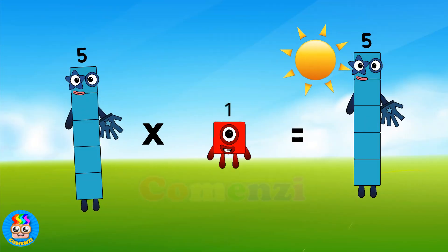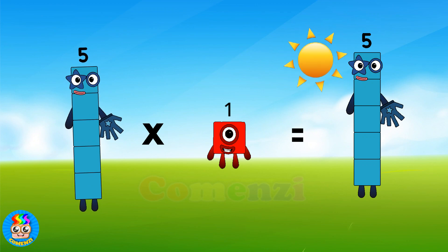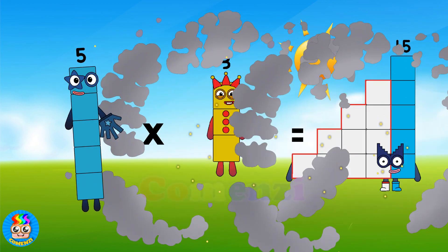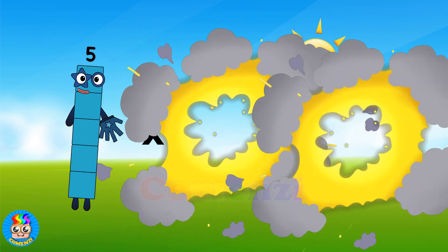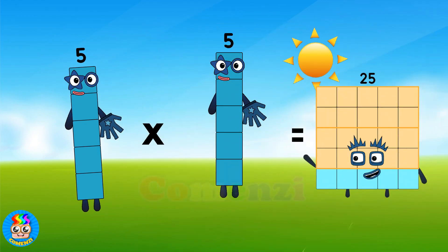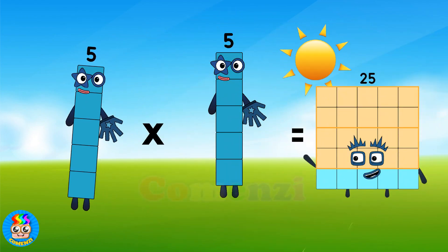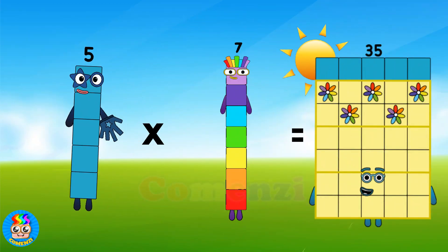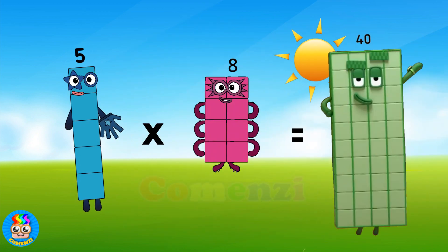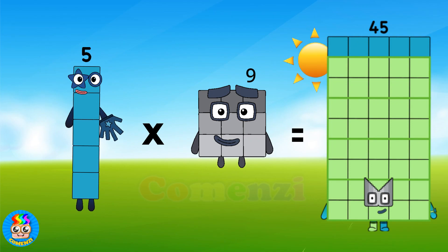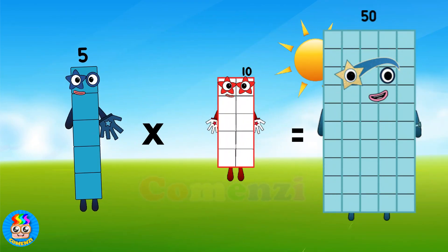5 times 1 is 5, 5 times 2 is 10, 5 times 3 is 15, 5 times 4 is 20, 5 times 5 is 25, 5 times 6 is 30, 5 times 7 is 35, 5 times 8 is 40, 5 times 9 is 45, 5 times 10 is 50.